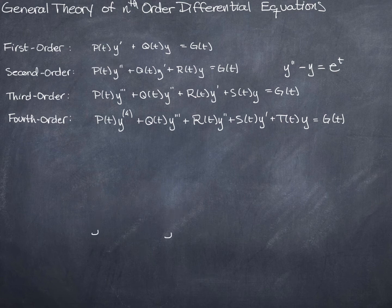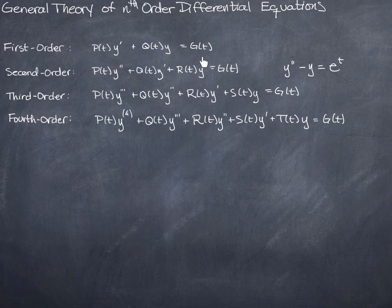So that's what these look like. In each case, I can divide through by p(t), making the highest derivative have a coefficient of 1 — as long as p(t) is not 0 on the interval in which the solutions exist.